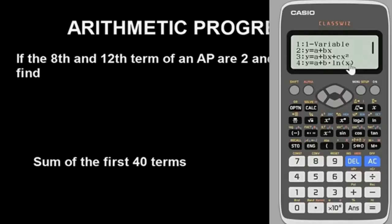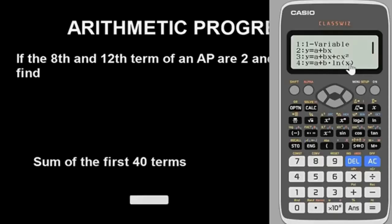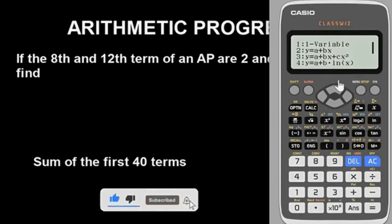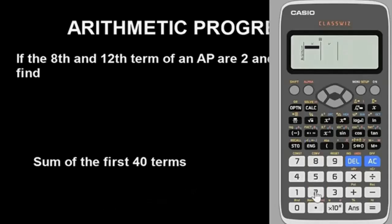Once you get into statistics mode, this step is very critical — if you miss it here, you miss everything. For arithmetic progression, go with option 2. Once you select that, it will bring you to the data entry screen. Now how many terms do we have in this question? We have two terms: 8 and 12, so those will be the x-values.